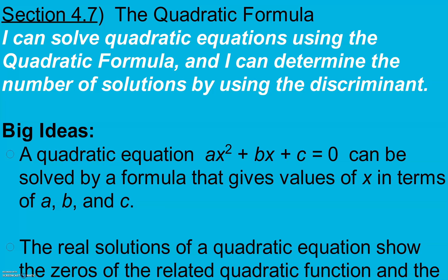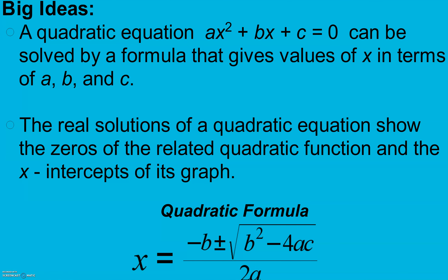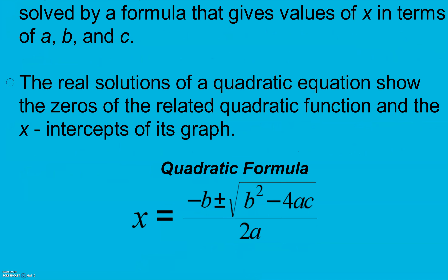Section 4.7 is on the quadratic formula. The learning objectives are: I can solve quadratic equations using the quadratic formula, and I can determine the number of solutions using the discriminant. The big idea is that a quadratic equation ax² + bx + c = 0 can be solved by a formula that gives values of x in terms of a, b, and c. The real solutions show the zeros of the related quadratic function and the x-intercepts of the graph. The quadratic formula is: x equals negative b plus or minus the square root of b squared minus 4ac, all over 2a.